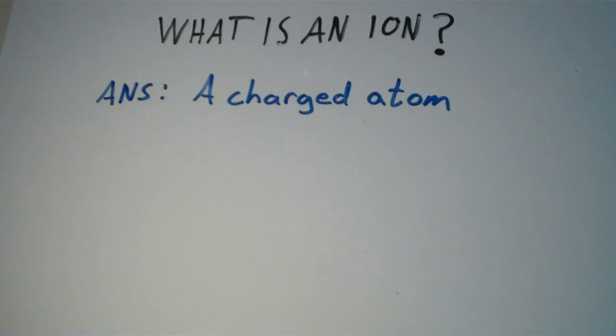The way that ions form is a neutral atom can either gain or lose electrons to become an ion.